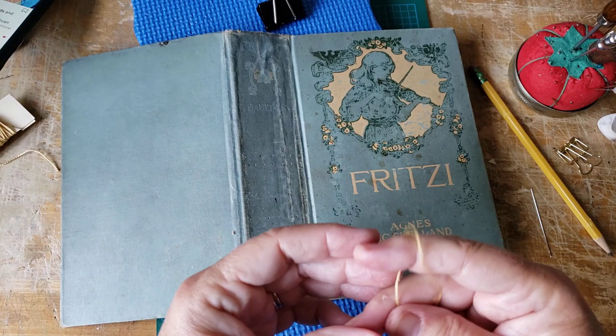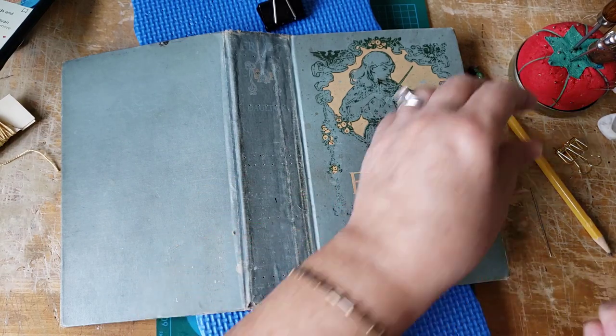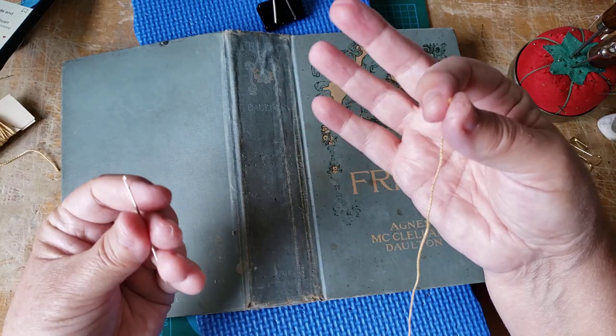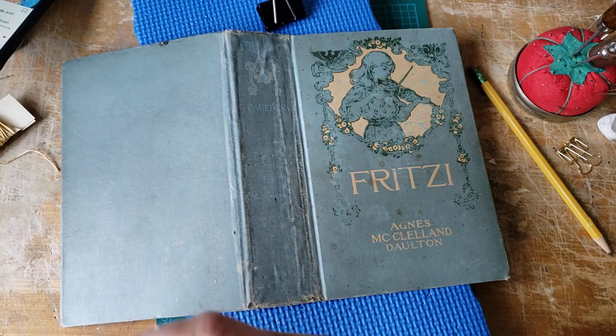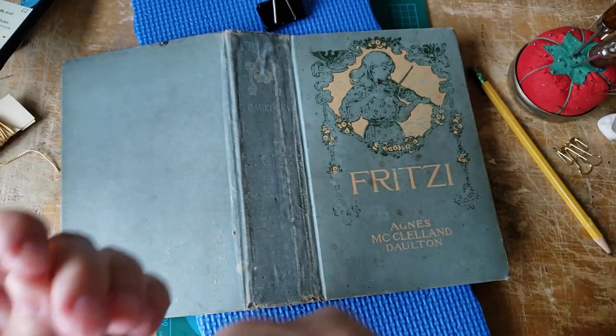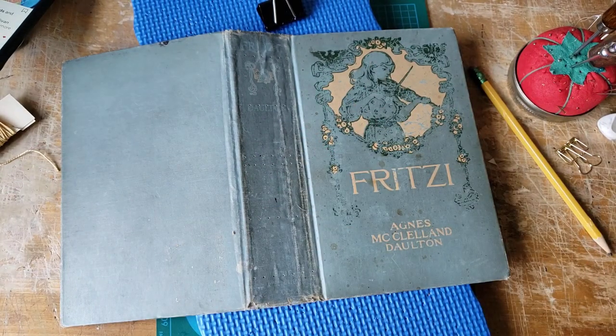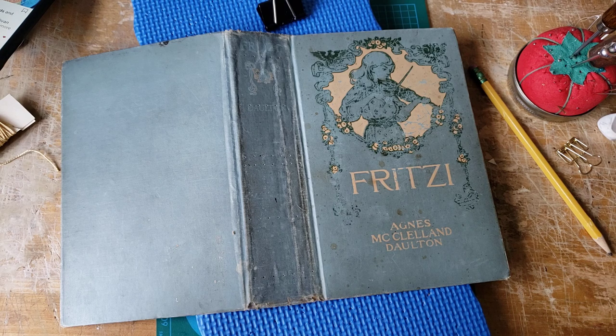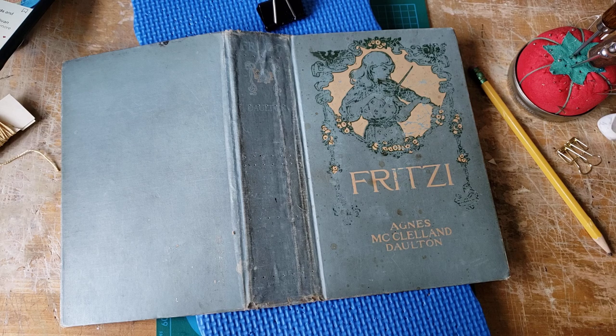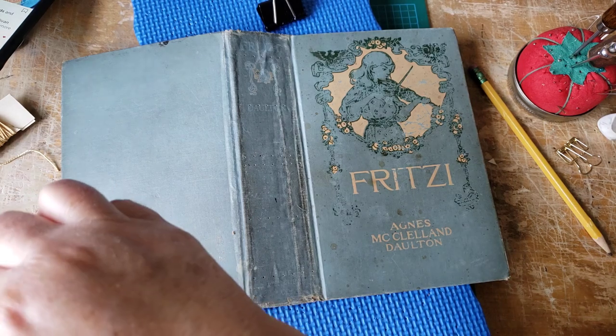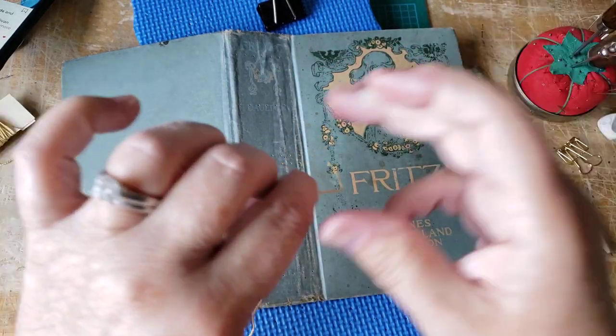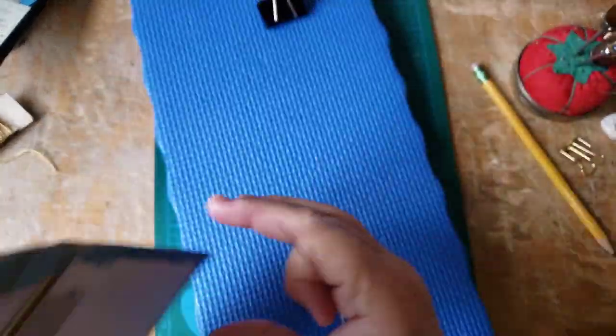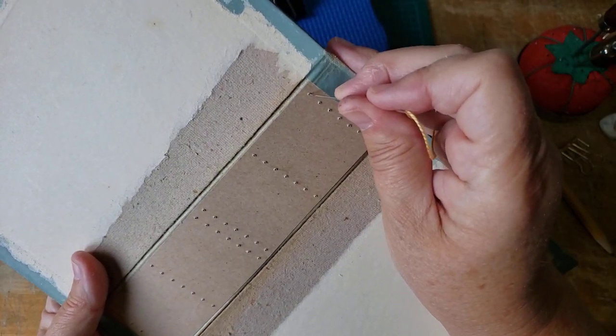Unlike when you do embroidery, needlepoint on tablecloths in our mothers and grandmothers generation, there was just a great sense of pride when the back could be almost as pretty as the front. My mother was that kind of embroiderer. Not only is it a sense of pride because it's pretty, but it also lays flatter. There's less bulk when you actually do a nice, neat job. So we're just going to go for it.